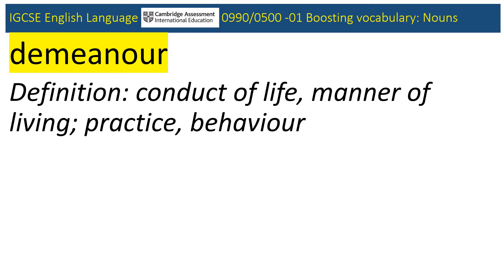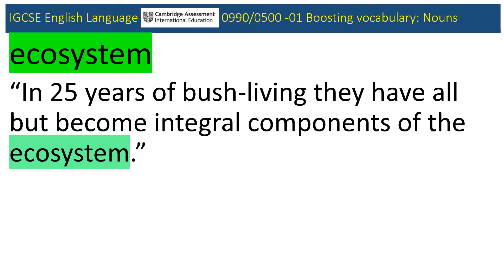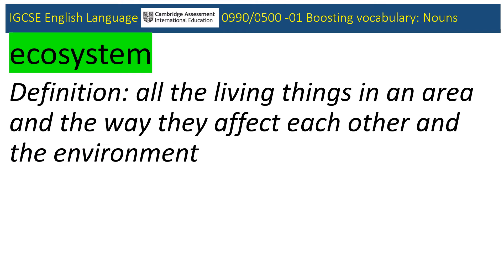Don't get confused between demeanour and countenance. The former's definition is shown on screen — demeanour is your overall behaviour and how you come across. Countenance is someone's facial expression. Let's move on to ecosystem, used in the June 2019 0990 paper. This article talks about the effects of tourists on Africa's wildlife. Define ecosystem — it's the interrelatedness of different types of living creatures and the impact they have on their environments.